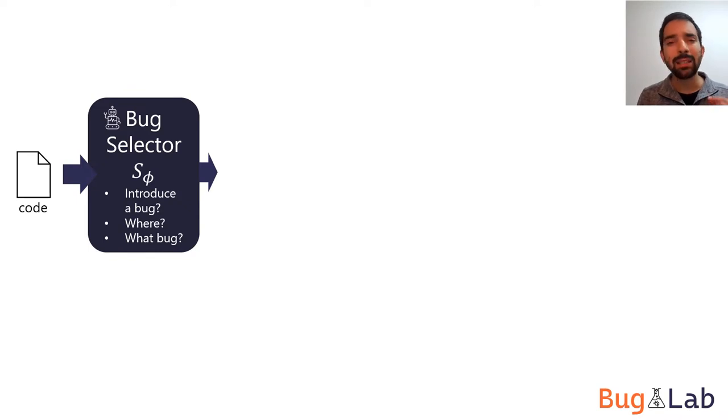These bugs may look simple, but are usually hard to detect. When the selector picks an action, we rewrite the code.